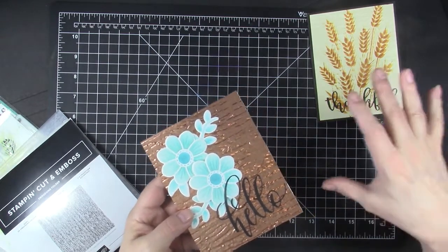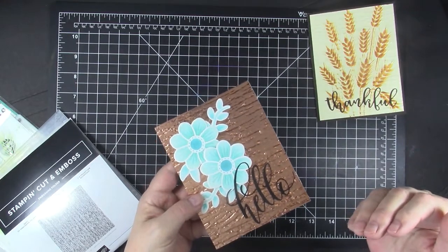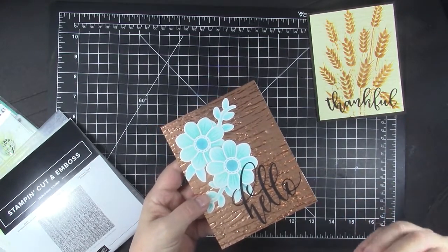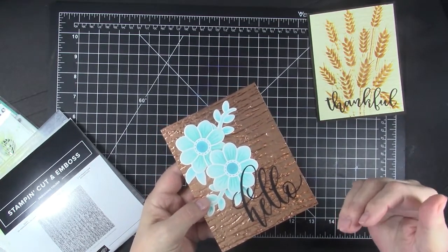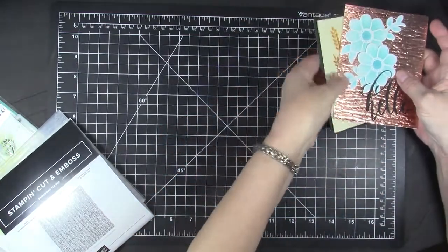Of course, all the details on all of these cards, including products and links and everything, are in the description box. There are links in the description box also to my blog posts with more details on each of these cards.